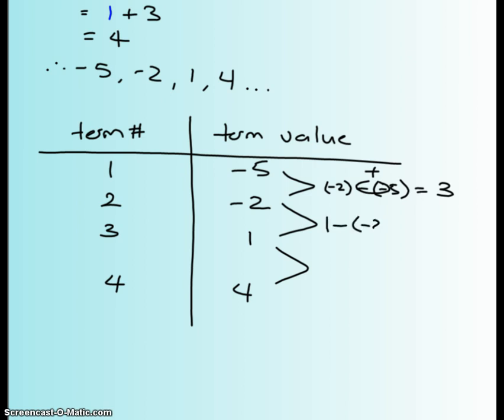So it looks like it keeps going up by 3s, and this is why I wanted at least 4 terms to kind of see if I had some sort of a pattern. And it looks like they keep increasing by 3s.